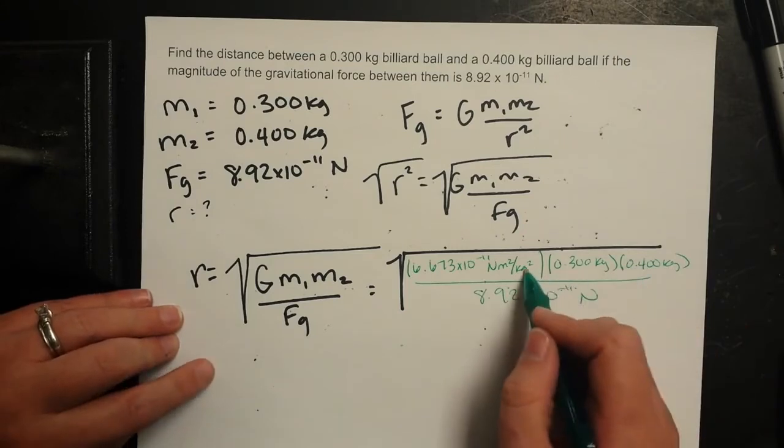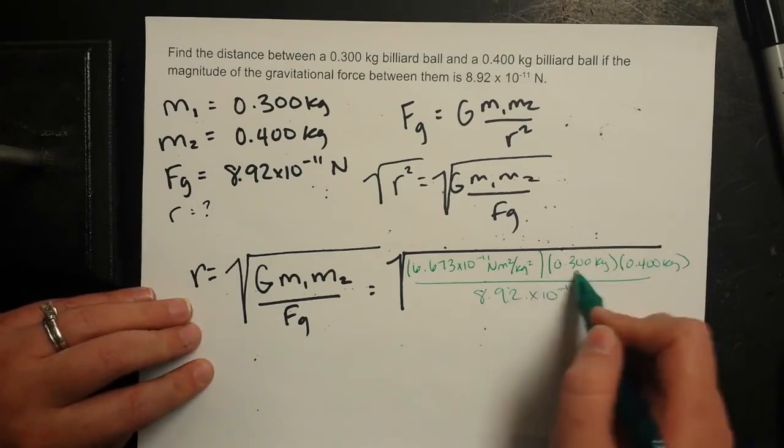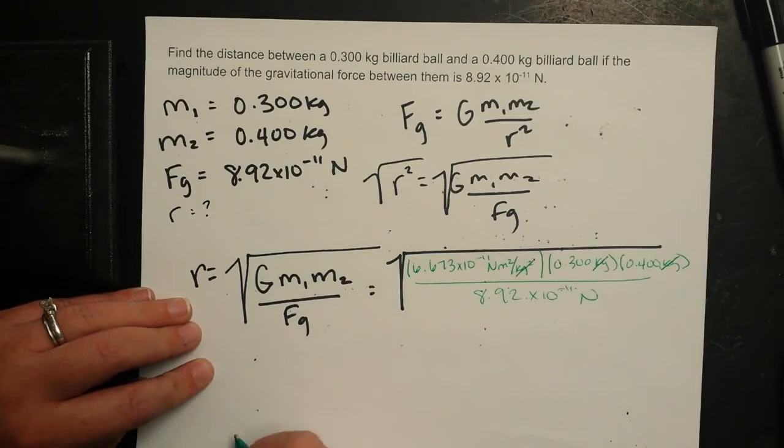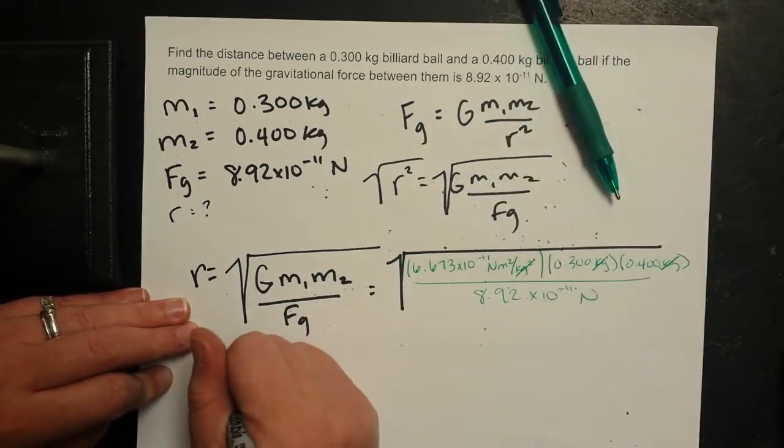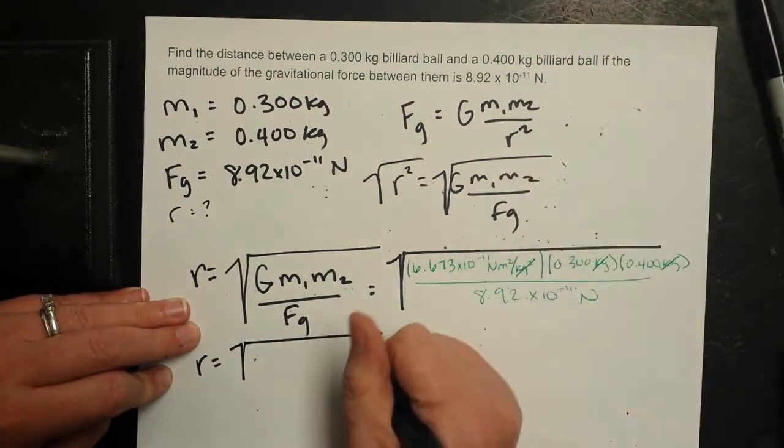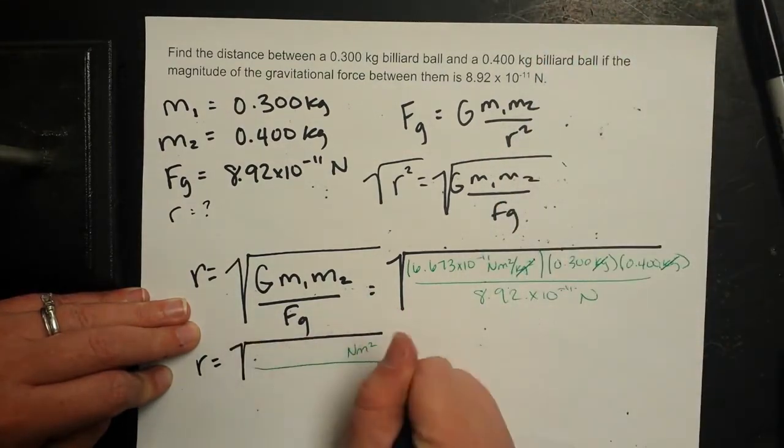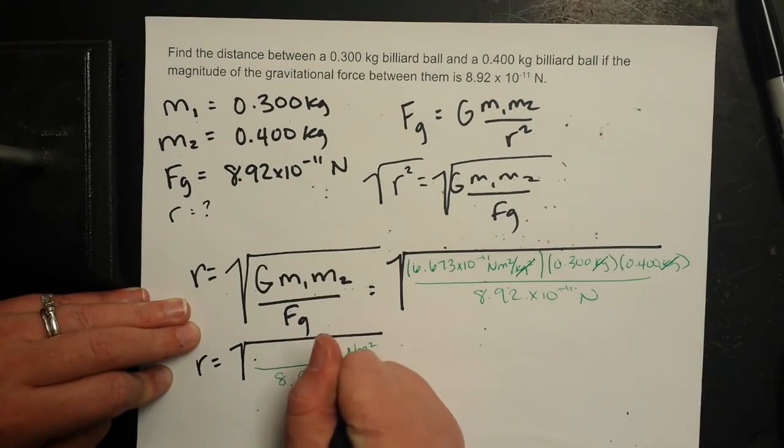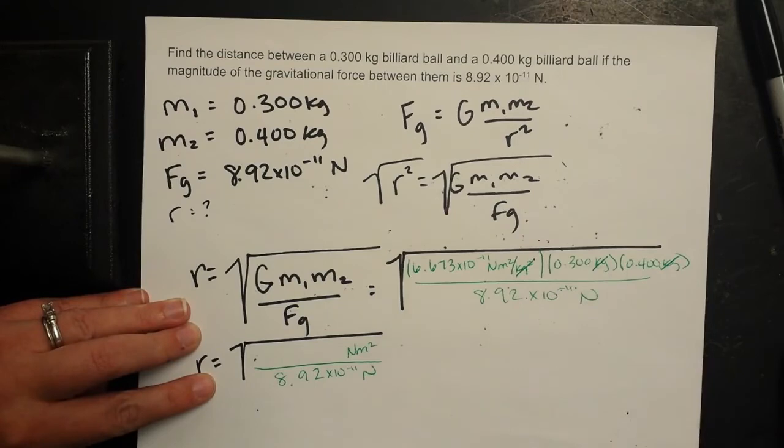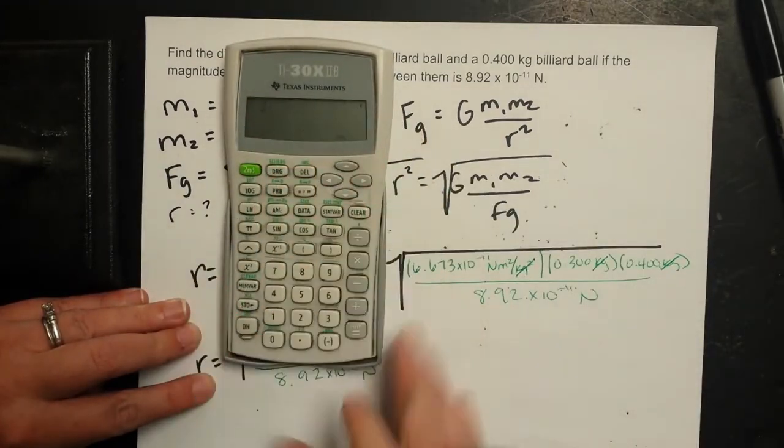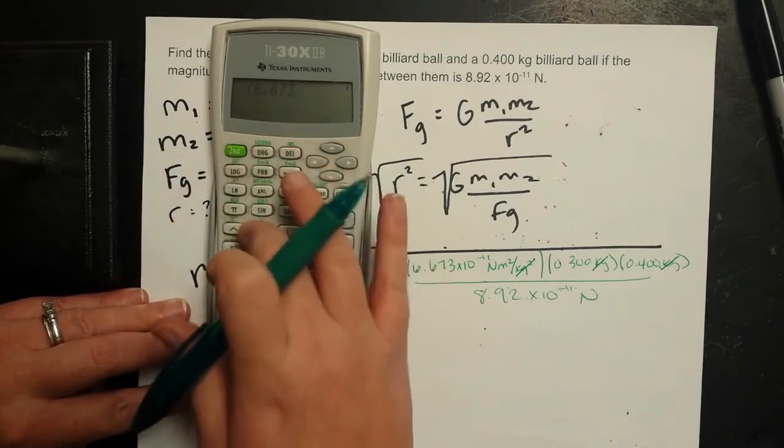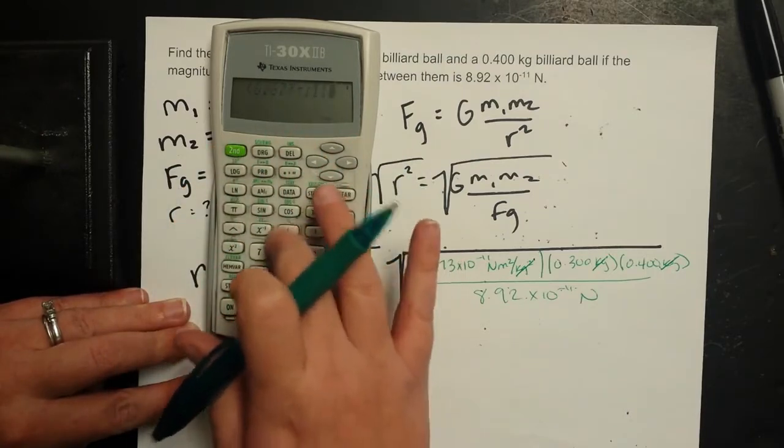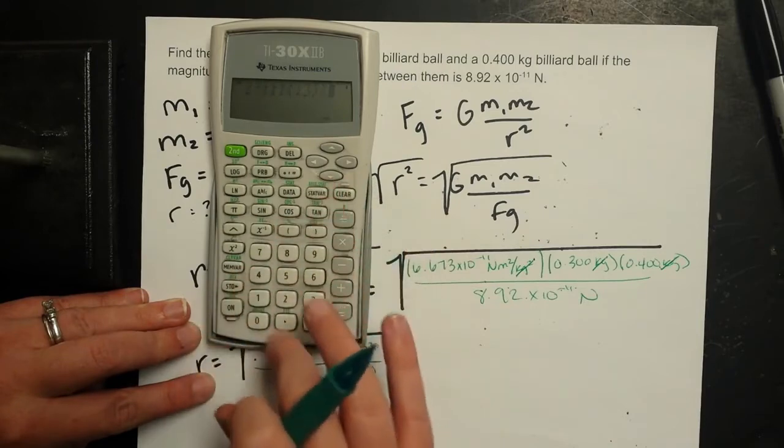To solve my numerator I do see that this kilogram times kilogram will cancel out my kilogram squared. So I got R then is equal to something with a newton meter squared all over 8.92 times 10 to the negative 11th newtons. If I go ahead and multiply across the top I'm going to have in my numerator 6.673 times 10 to the negative 11th times 0.3 times 0.4.